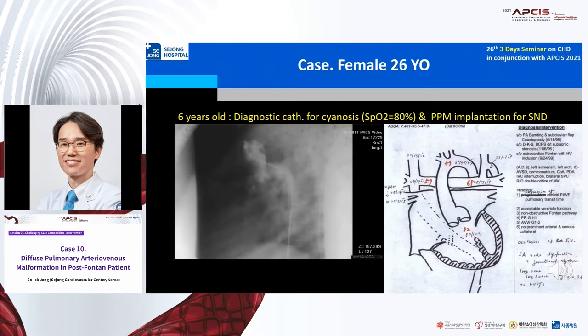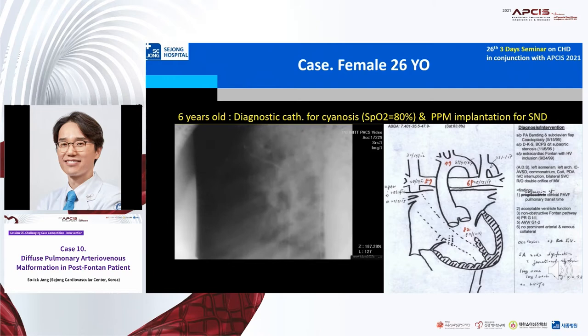However, her cyanosis recurred 3 years later. Resting saturation was around 80%, so we did diagnostic cath. The pulmonary AVM on the right side was improved, but on the left side remained. Also, CVP was 19 mmHg and ventricular EDP was 20 mmHg.